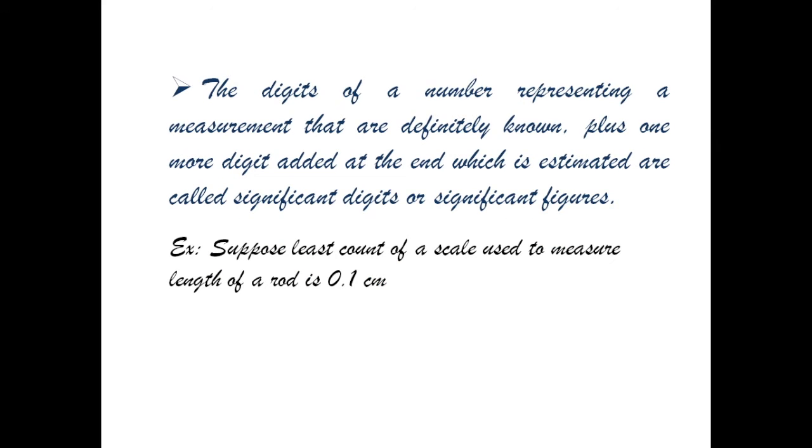The digits of a number representing a measurement that are definitely known, plus one more digit added at the end which is estimated, are called significant digits or significant figures. Suppose the least count of a scale used to measure length of a rod is 0.1 cm.